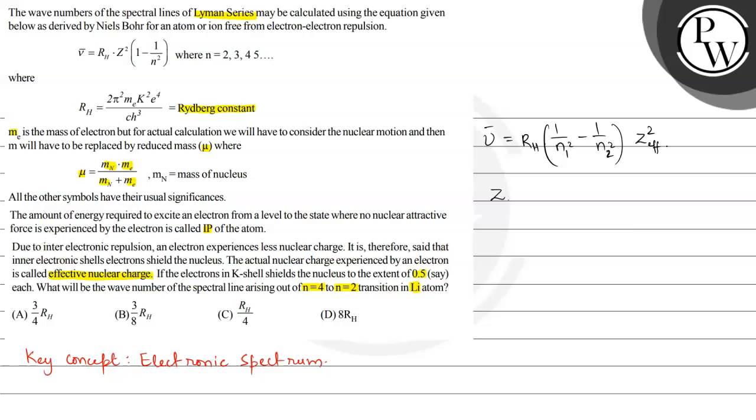Now, z effective is the actual value of z minus shielding. Let's represent the shielding with sigma. And lithium's electronic configuration is 1s2, 2s1. If I represent this in K and L shells, then K shell has two electrons and L shell has one electron.